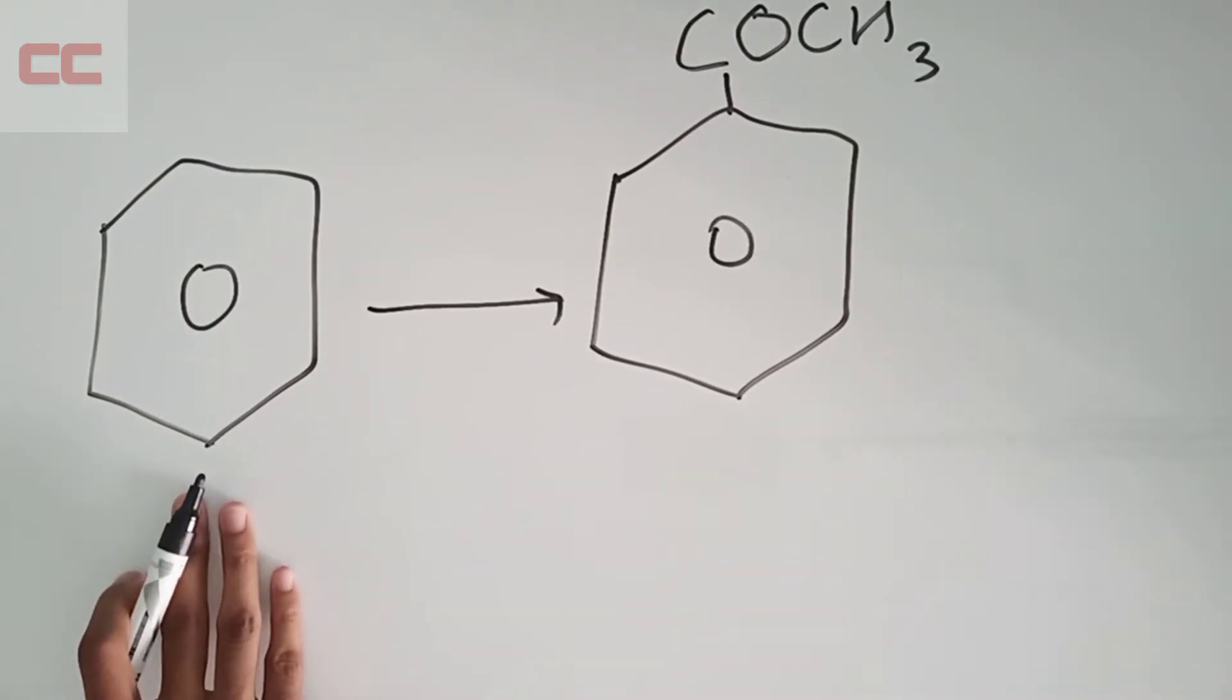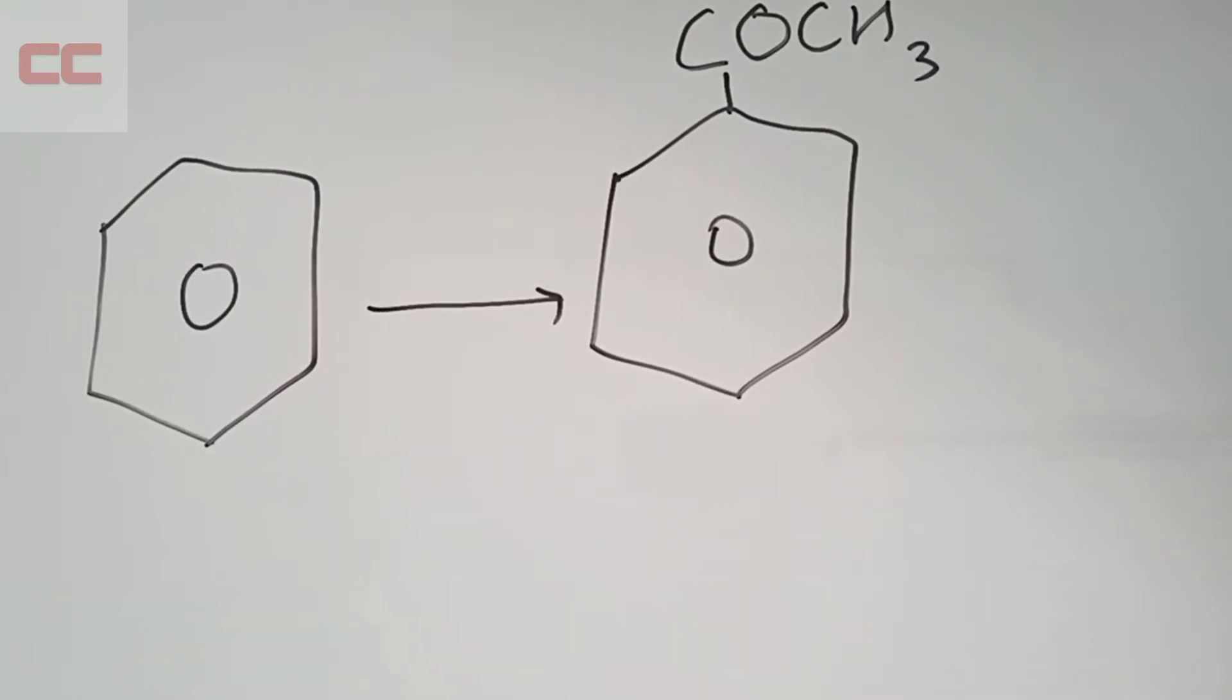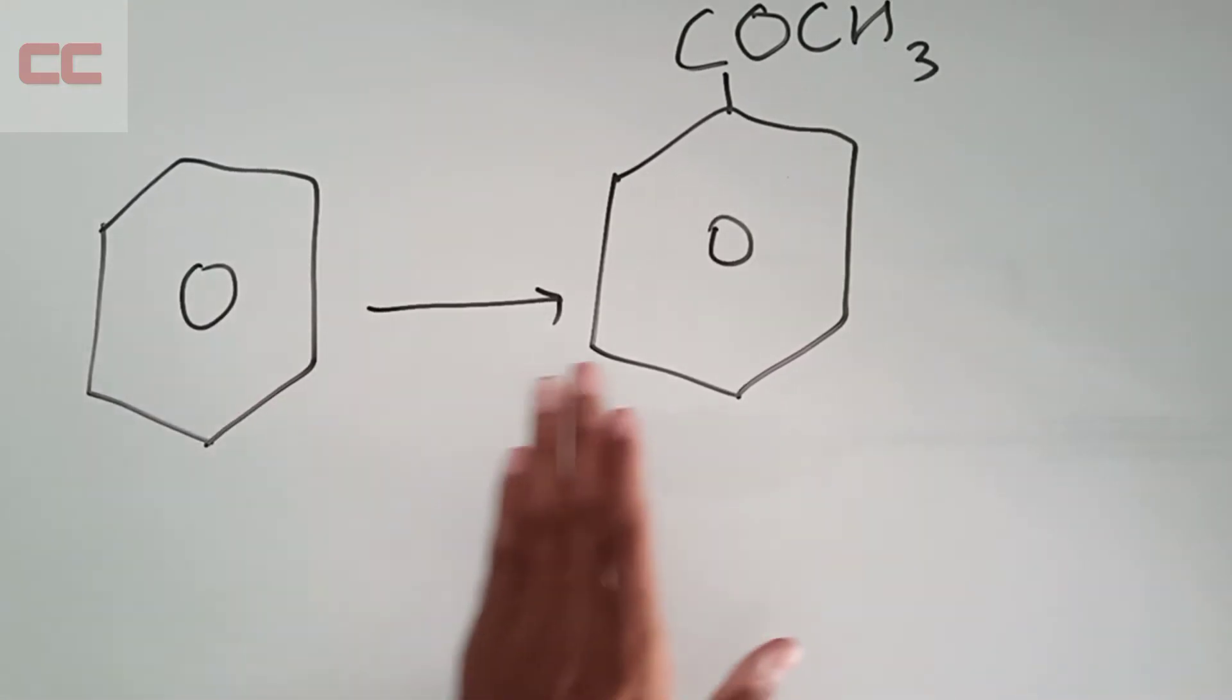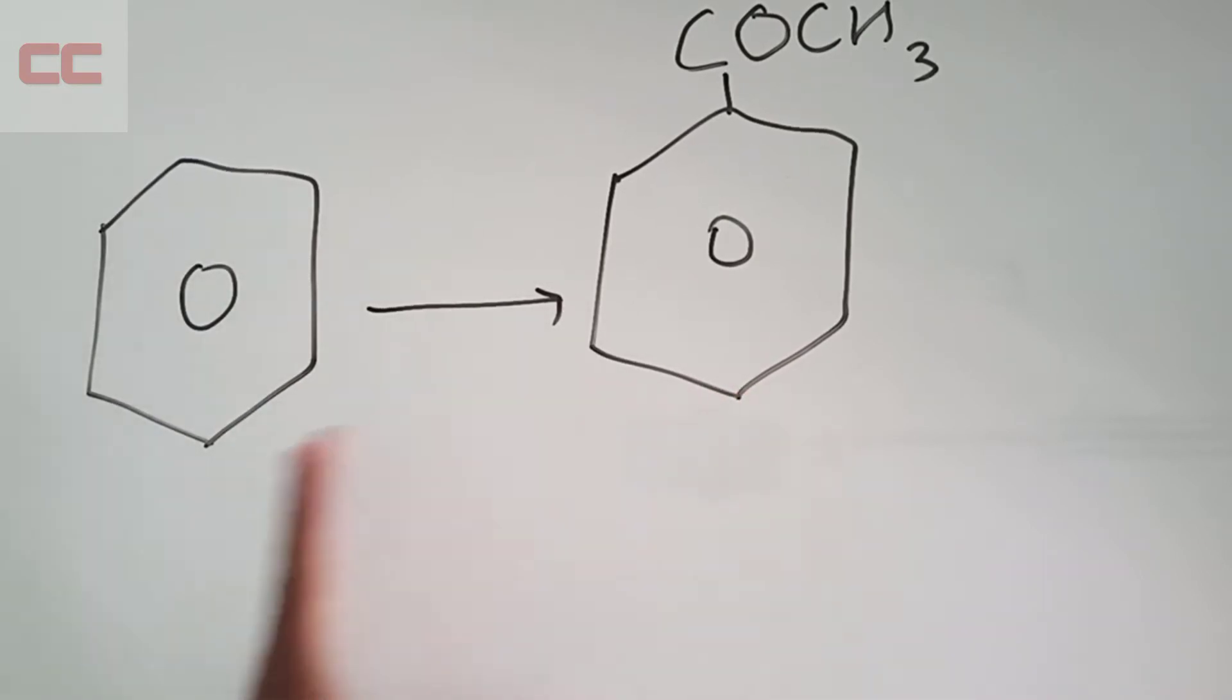This is C6H6, that is benzene, an aromatic compound. By looking at this kind of question in exams, you must be wondering how to get this product from a simple compound like benzene. Benzene has the ability to give COCH3, we all know that, but what is the process in between? What are the reagents or catalysts that are being used in this reaction?